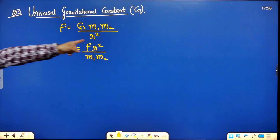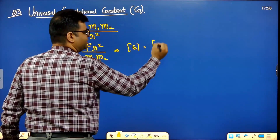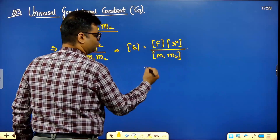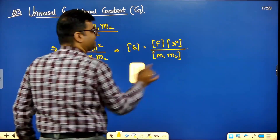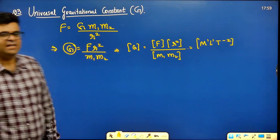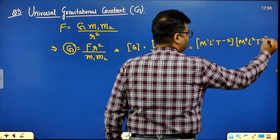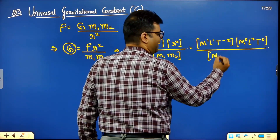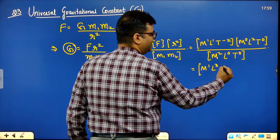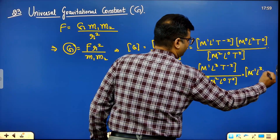To find the dimensions of G: force is M¹L¹T⁻², r² (distance squared) is M⁰L²T⁰. Numerator multiplied: M¹L³T⁻². Denominator (two masses) is M²L⁰T⁰. Dividing: M¹⁻²L³⁻⁰T⁻²⁻⁰ = M⁻¹L³T⁻².